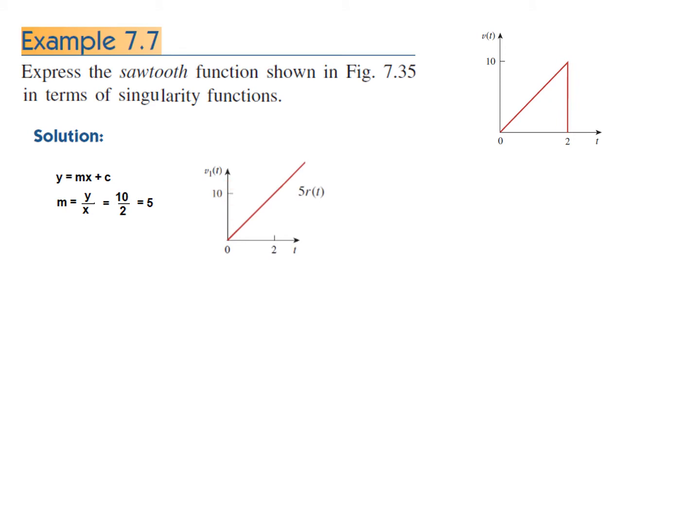The first thing we do is draw a ramp function of slope 5, which is 5r(t). We name it V1. This is going up to t = infinity, but we need to limit it up to t = 2. One way is to draw another singularity function at t = 2 but opposite — so negative 5r(t) in the negative direction. So V2 = -5r(t-2). The result is that these two will cancel after t = 2.